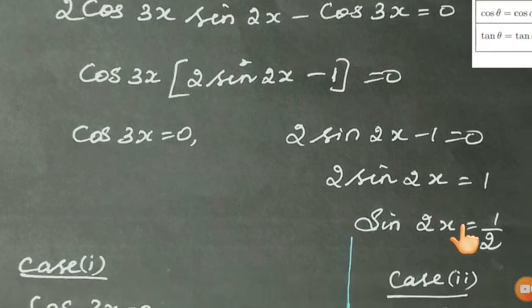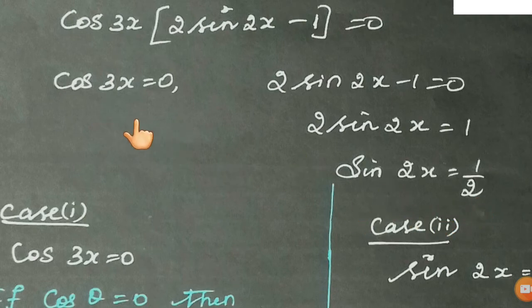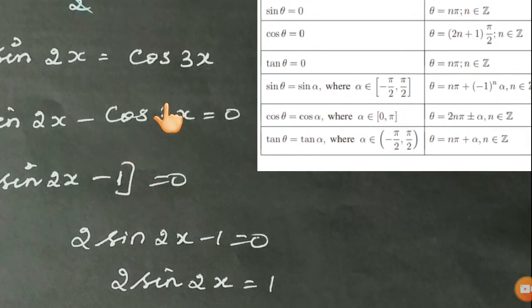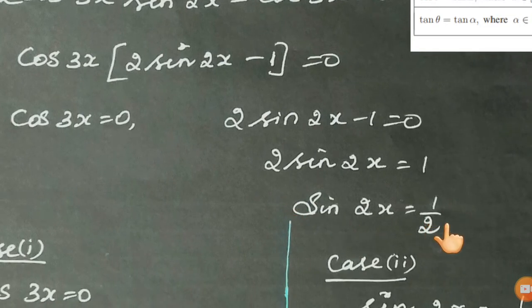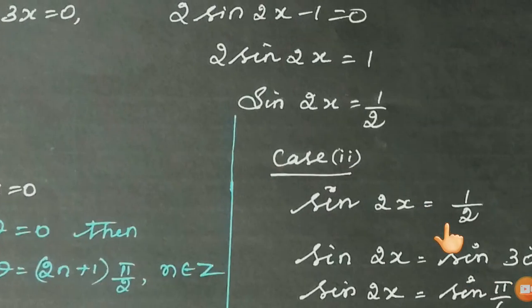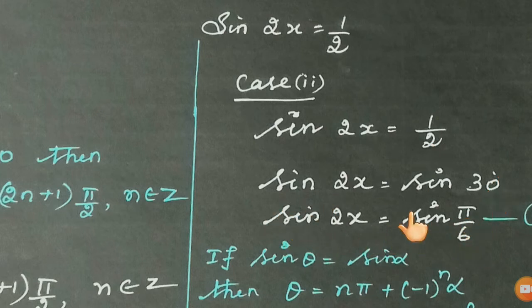You have cos 3x times (2 sin 2x minus 1) equals 0. Equating each factor to zero: cos 3x equals 0, and 2 sin 2x minus 1 equals 0, which gives sin 2x equals 1/2. Now we will find the x values using the general solution formulas.